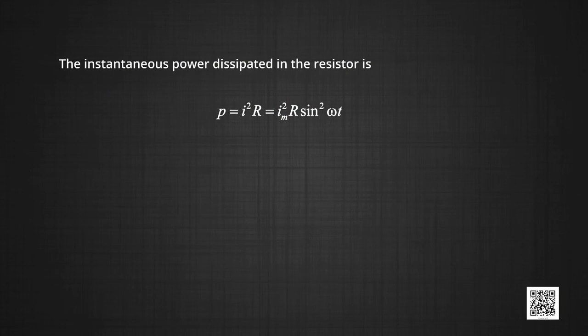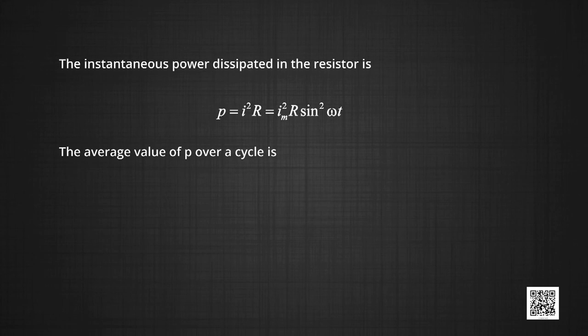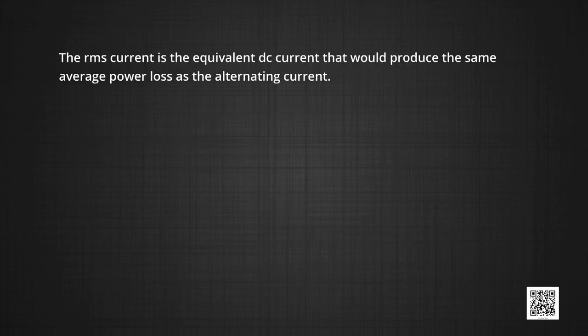In the previous part of the module, we had the following conclusion: the instantaneous power dissipated in the resistor is P = I²R = I²_RMS · R · sin²(ωt). The average value of power over a cycle is P = ½I²R, where I² is I_RMS. This RMS current is equivalent to the DC current that would produce the same average power loss as the alternating current.